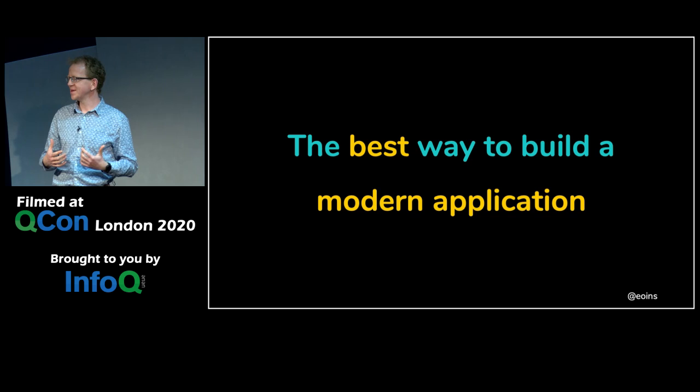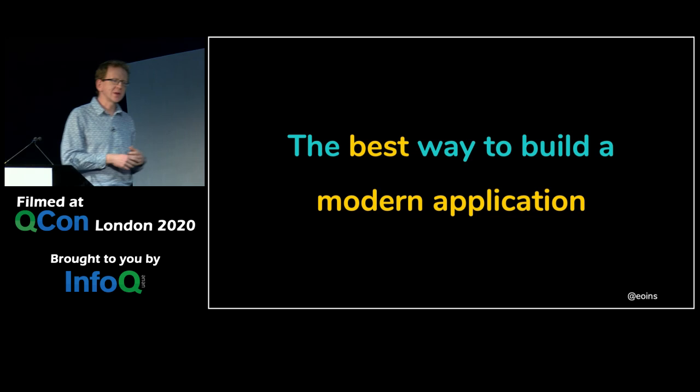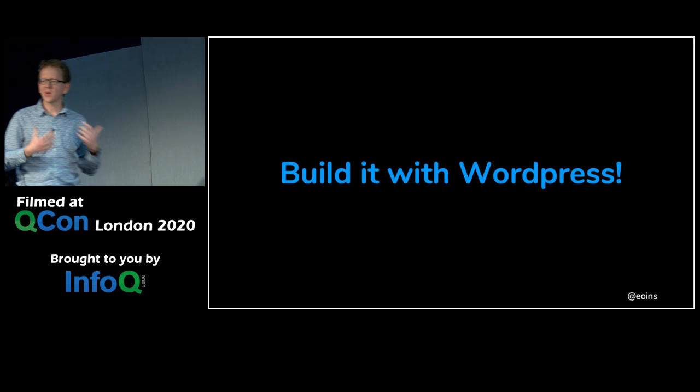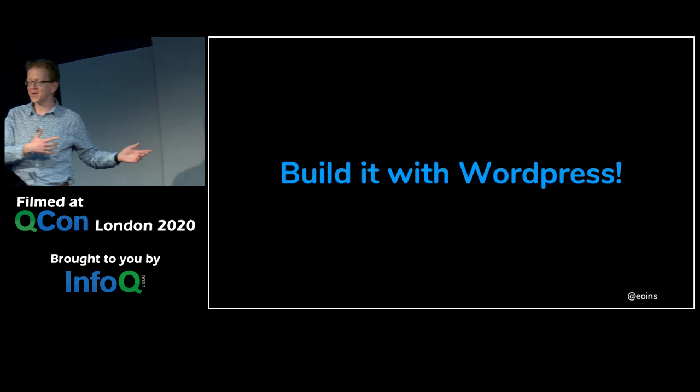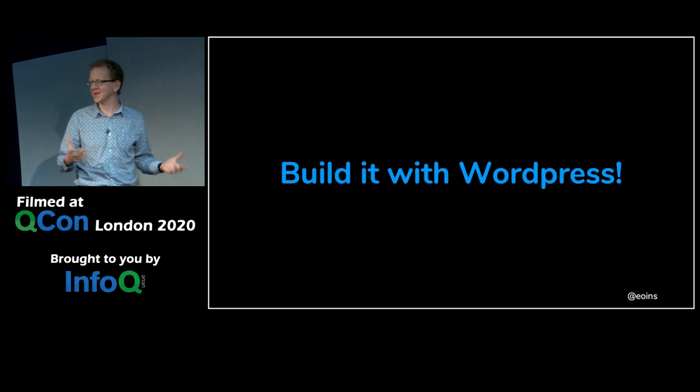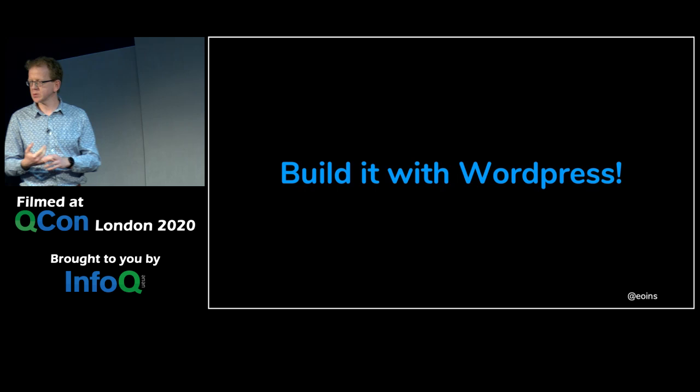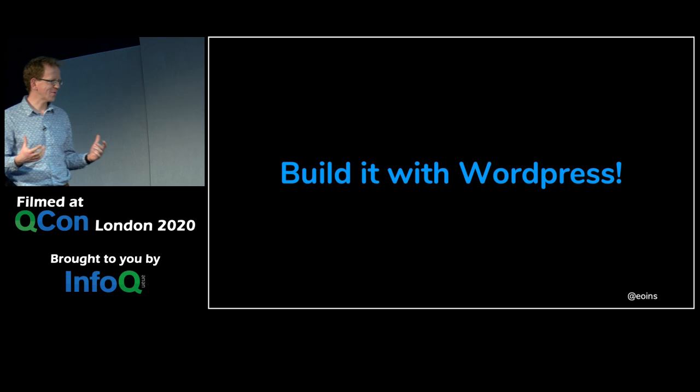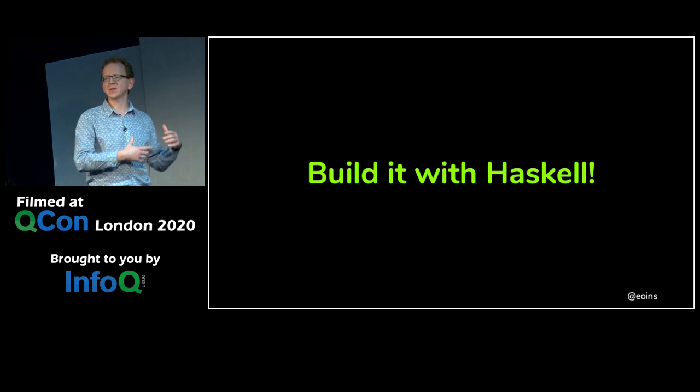So given all of that, let's look at what tools and methods you could use to build the ideal modern application. You might laugh, but 60% of websites on the internet are apparently built with WordPress. It's proven, it's open source, it's been stable for a long time. It's not very trendy — it's not great for the CV to build with WordPress, maybe. So that might be a bit of a downside.